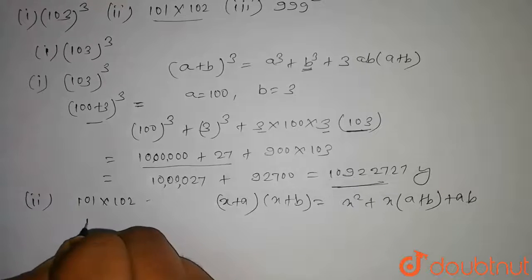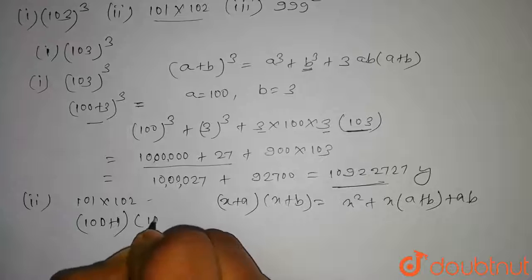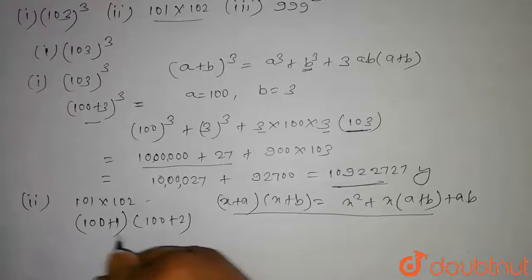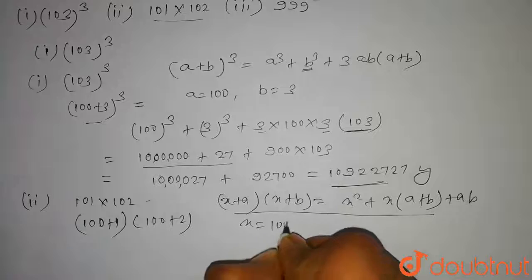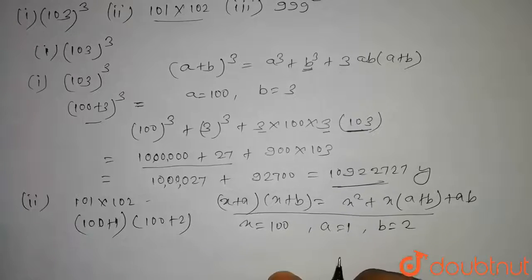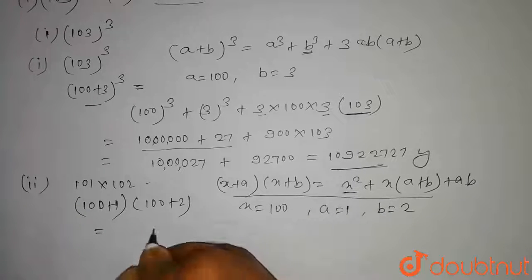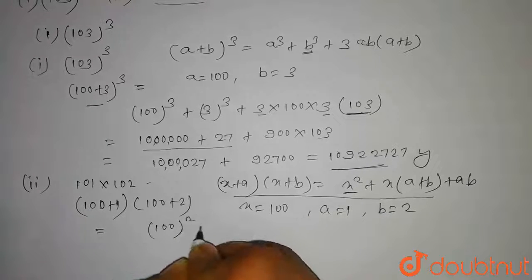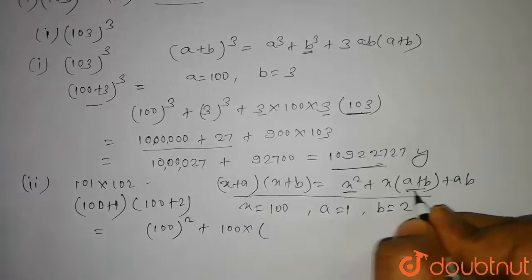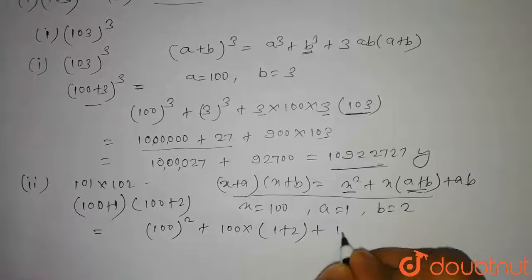We can write this as (100 + 1)(100 + 2). On comparing with the identity, we get x = 100, a = 1, and b = 2. So this can be written as x² + x(a + b) + ab, that is 100² + 100 × (1 + 2) + 1 × 2.